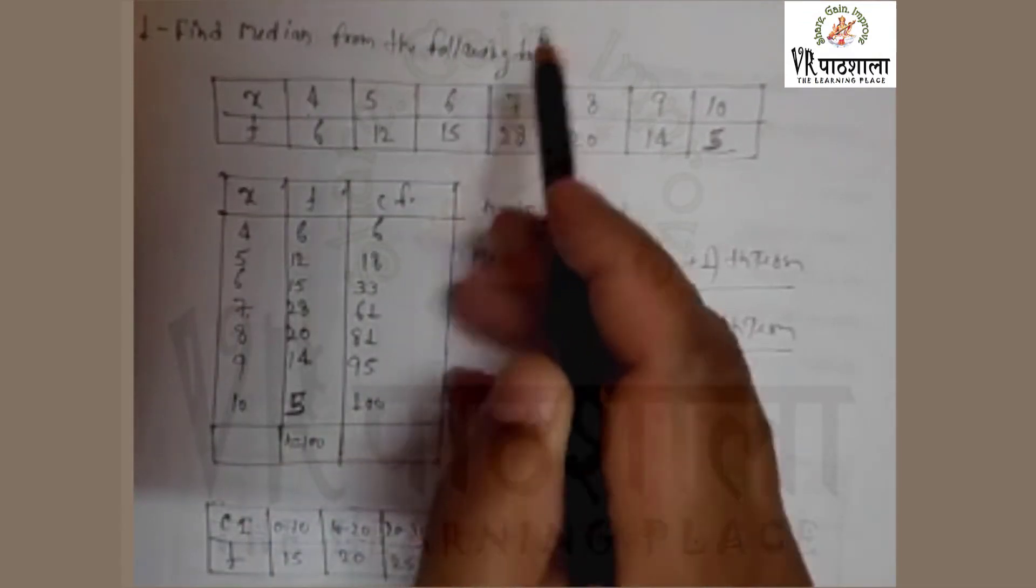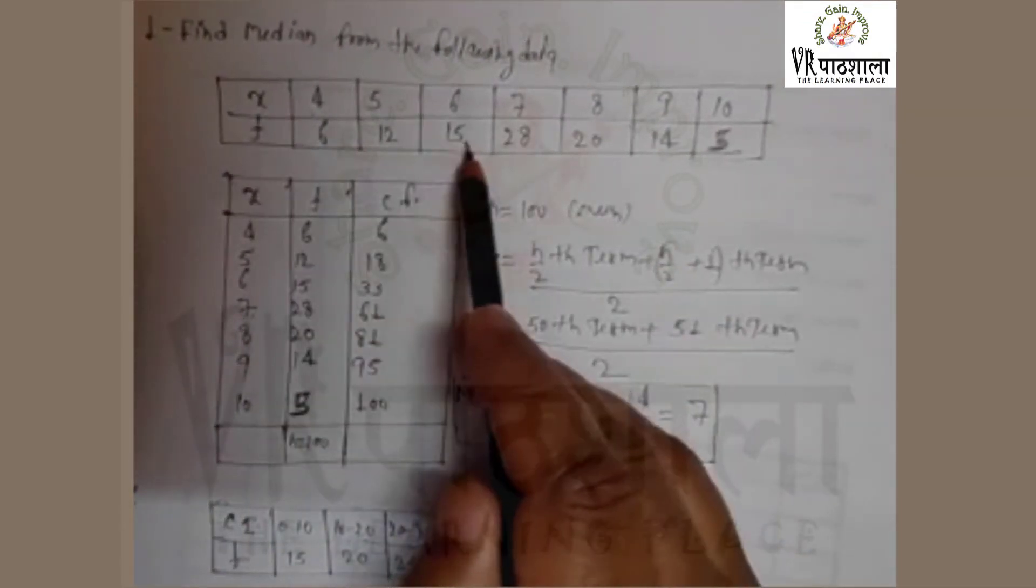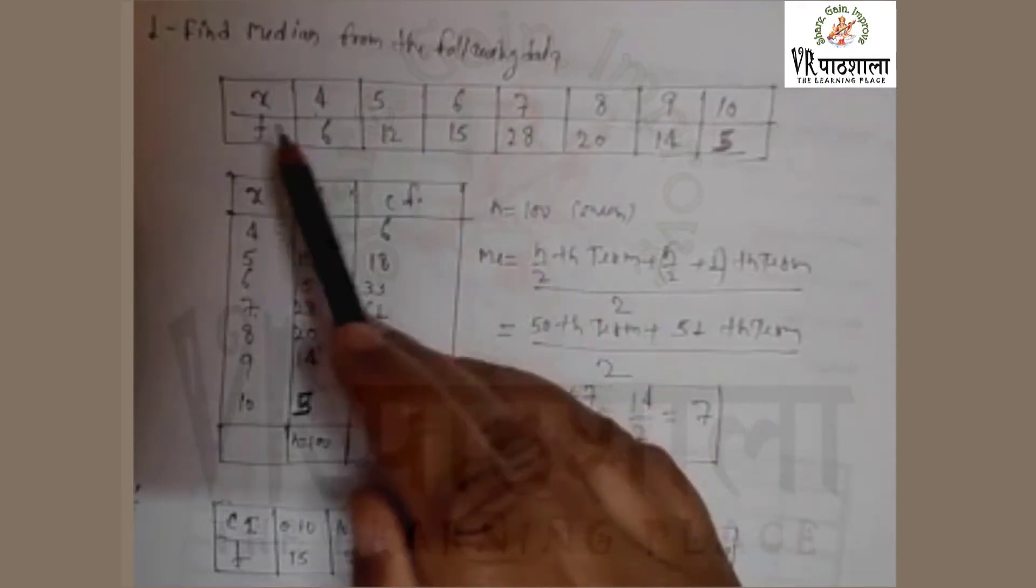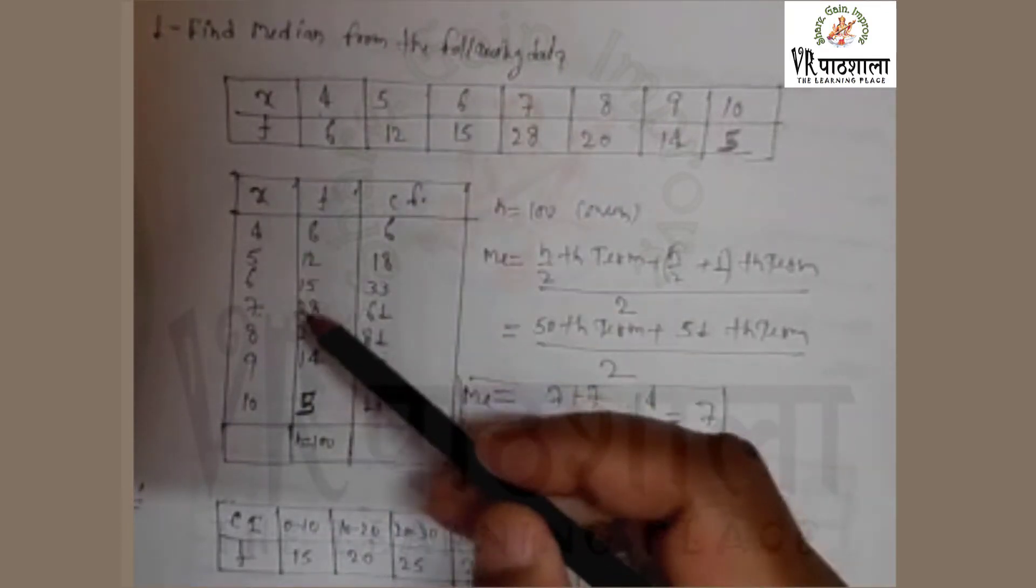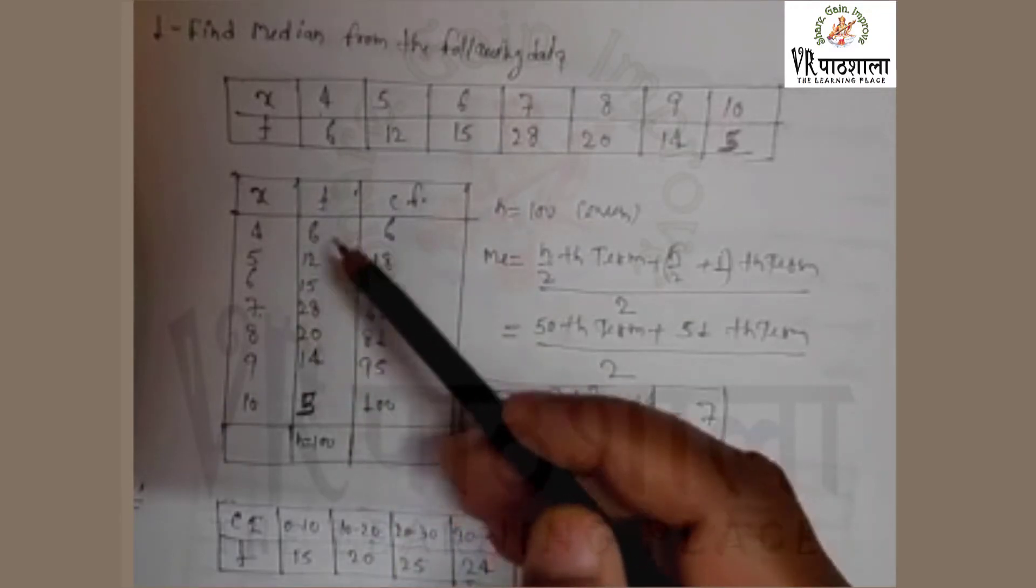Find the median from the following data. This is ungrouped data when class interval is not given. We first arrange the data in vertical form x and f.